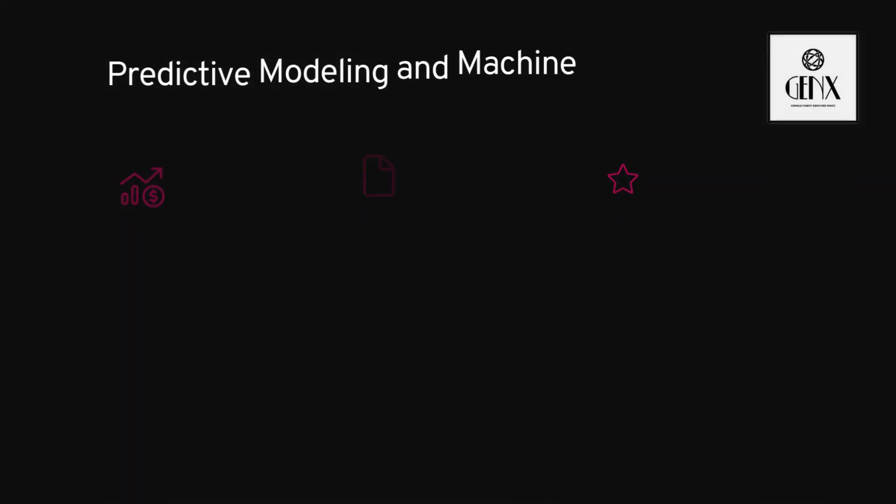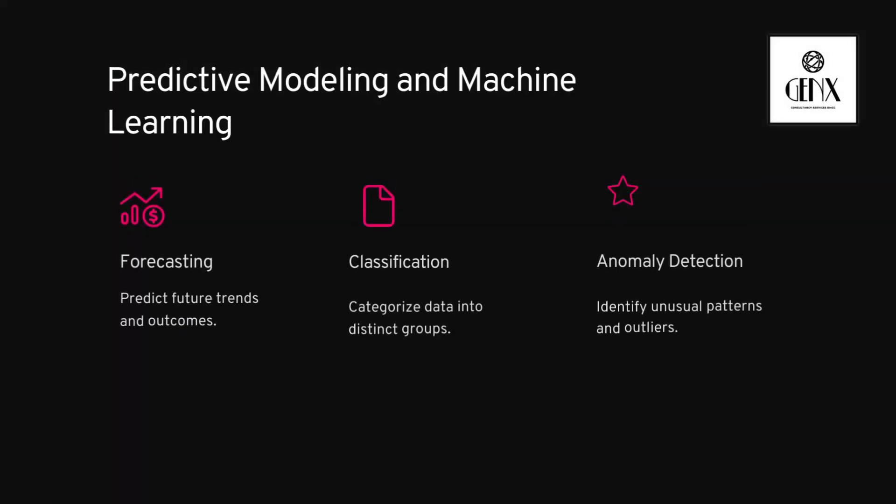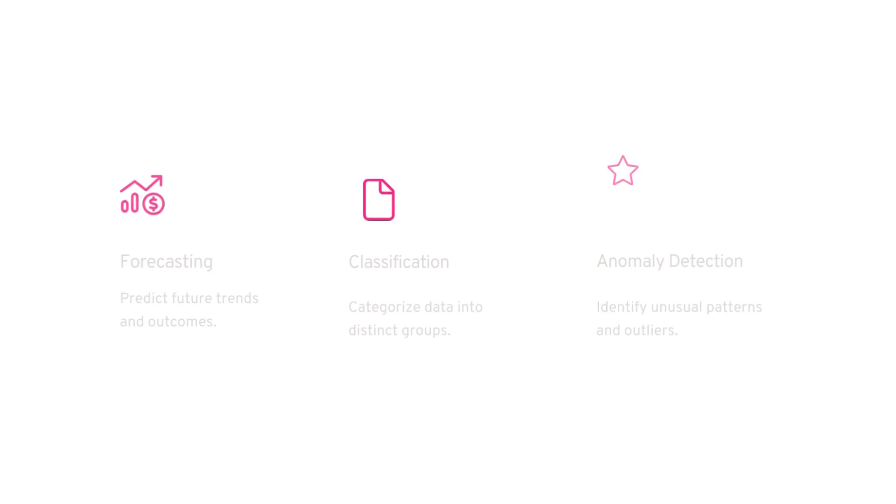Predictive modeling and machine learning: forecasting — predict future trends and outcomes; classification — categorize data into distinct groups; anomaly detection — identify unusual patterns and outliers.